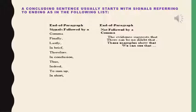When you write your concluding sentence, you should start with a word referring to ending the paragraph, such as 'finally,' 'lastly,' 'in brief,' 'therefore,' or 'in short.' All these words must be followed by a comma. You can also start the concluding sentence with phrases like 'the evidence suggests that,' 'there can be no doubt that,' 'these examples show that,' or 'we can see that.' You must start the concluding sentence with a signal word referring to the end of the paragraph.